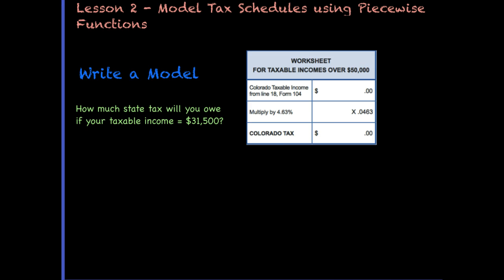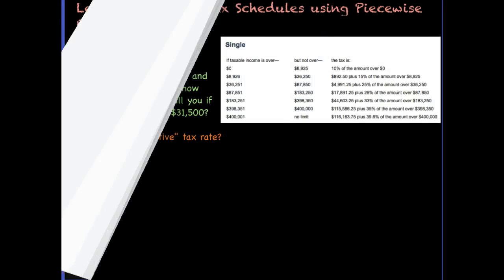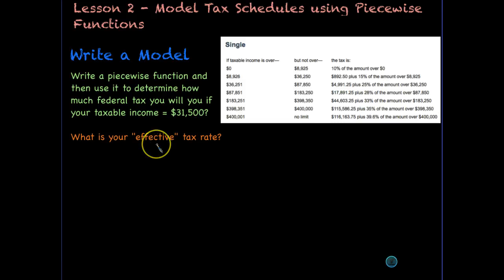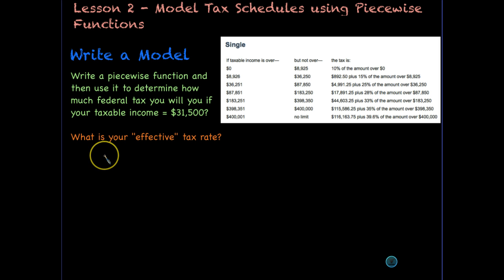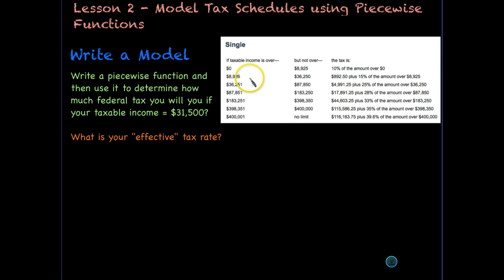Now let's look at the federal tax structure and see how much we'd owe on the same income for federal tax purposes. When we're done, we'll calculate our effective rate. To represent these different domains, we'll write a piecewise model, since our equations will be different depending on where our income falls.